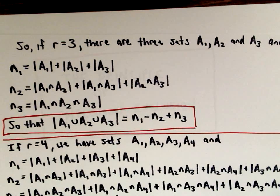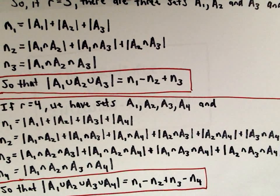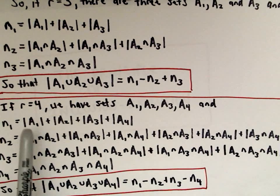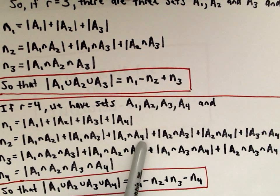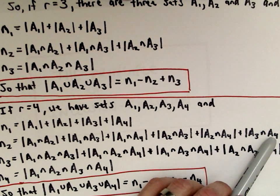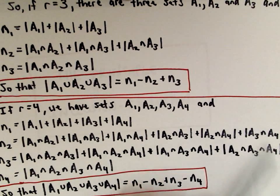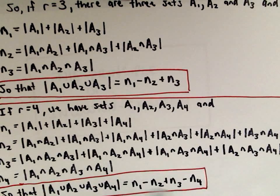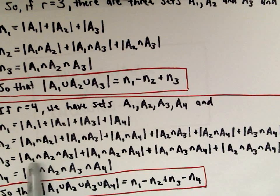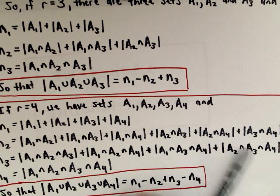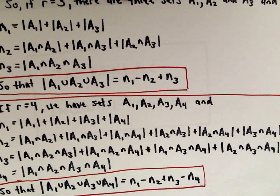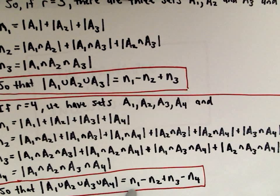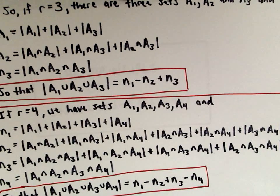For four sets A1, A2, A3, A4: n1 adds them all individually. N2 looks at all pairwise possibilities — A1∩A2, A1∩A3, A1∩A4, A2∩A3, A2∩A4, A3∩A4 — that's six terms, which is C(4,2). N3 covers all combinations of three-set intersections — four terms, which is C(4,3). And n sub 4 is the intersection of all four sets. The claim is that the cardinality of the union equals n1 minus n2 plus n3 minus n4.